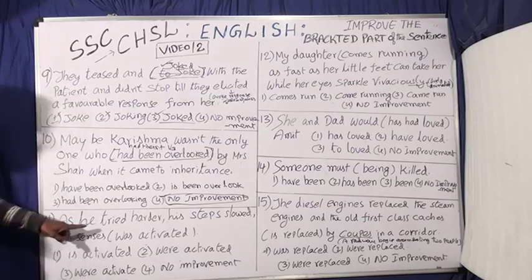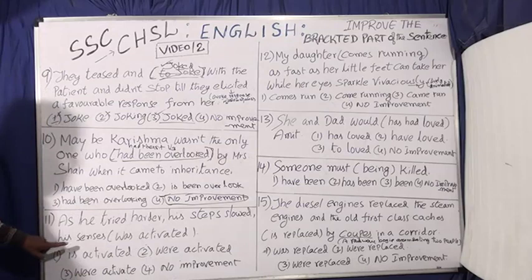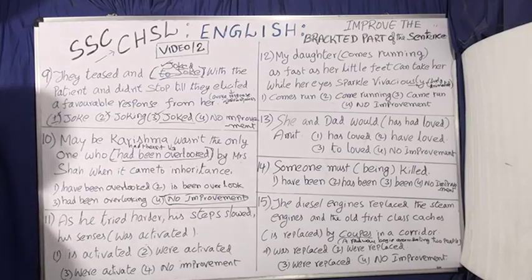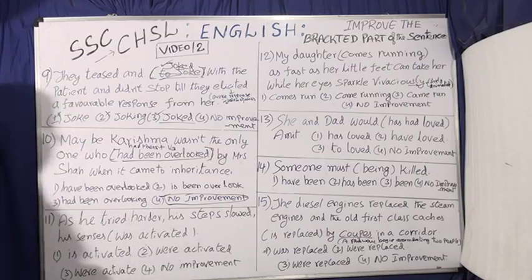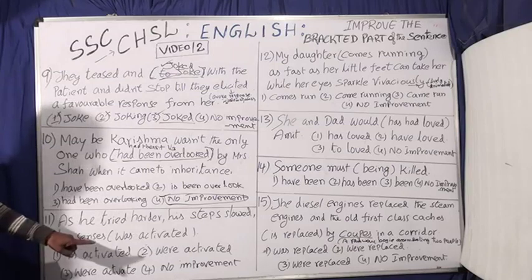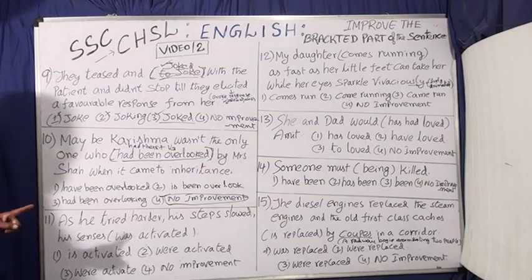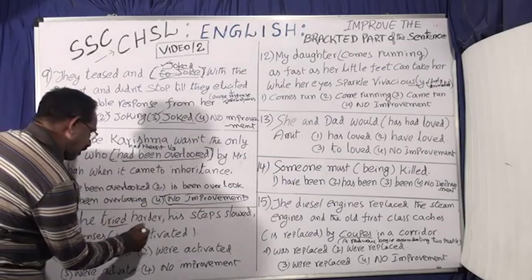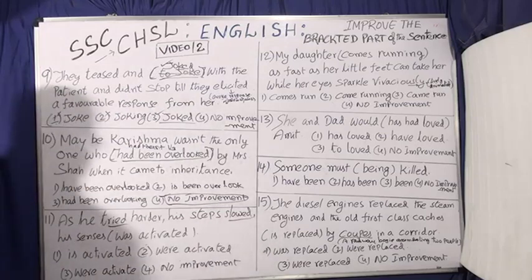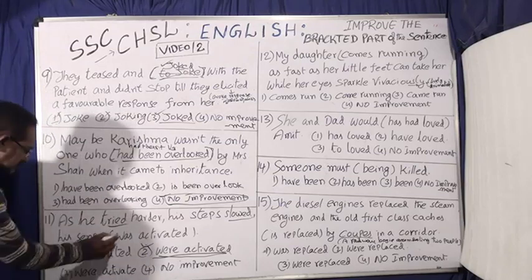Question eleven: As he tried harder, his steps slowed. His senses — bracket part — 'was activated.' Here also the sentence is in the past form: 'his steps slowed.' The subject 'his senses' is plural, so you cannot use 'was.' You have to use 'were activated.' Were activated is the answer — not 'was.' So the correct answer is 'were activated.'